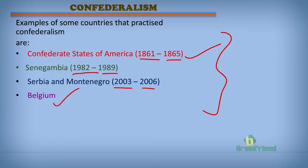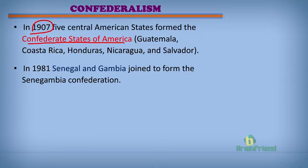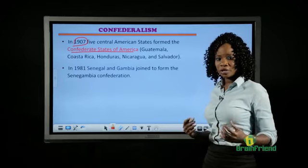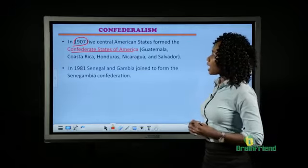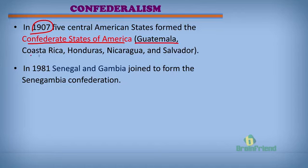At the time when the country known as the Confederate States of America practiced confederalism, around 1907, five Central American states — which were of course sovereign states — came together to form it. It was formed by five independent or sovereign states: Guatemala, Costa Rica, Honduras, Nicaragua, and El Salvador. All of these came together to form that confederacy.